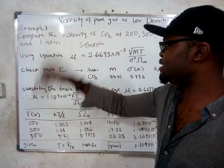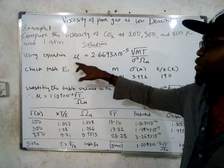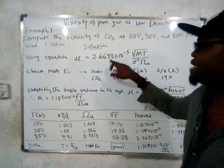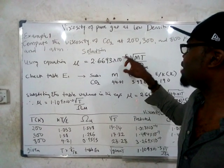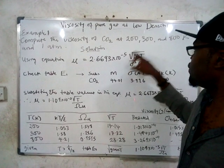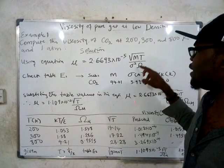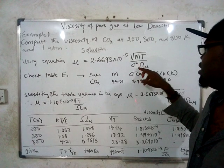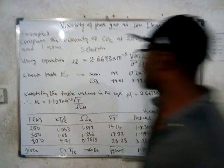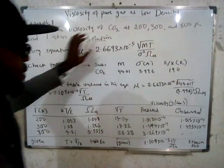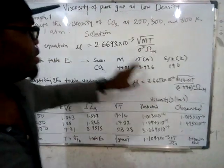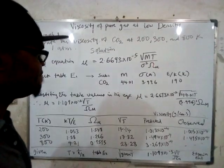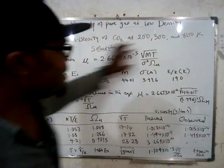The first thing you do is use the equation: μ (viscosity) = 2.6693 × 10⁻⁵ times the square root of MT, all over σ² Ω_μ. This is the formula. State this formula and try as much as possible to have it in your head.